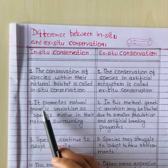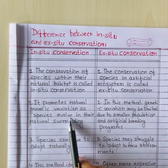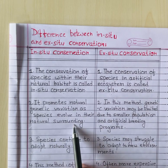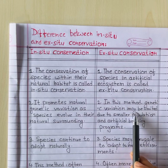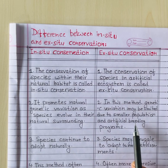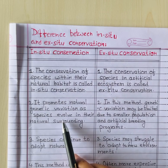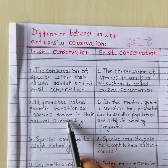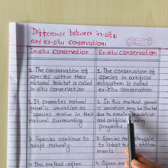Second point: in-situ conservation promotes natural genetic variation as species evolve in their natural surroundings. In ex-situ conservation, genetic variation may be limited due to smaller population sizes and artificial breeding programs. Within natural surroundings, the same species show greater genetic differences in in-situ conservation, while ex-situ conservation has limited variation.